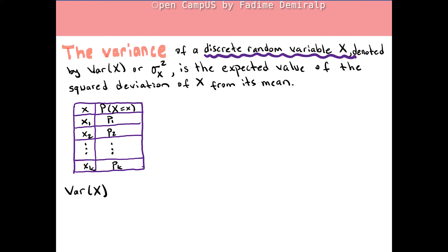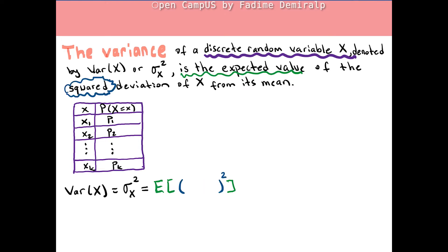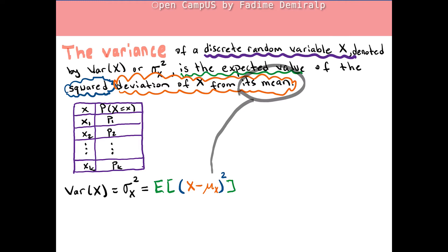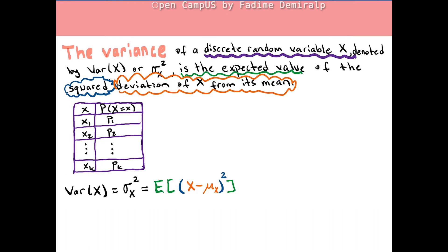The variance of x — or using sigma notation, sigma squared x — is the expected value, but not the expected value of x. It is the expected value of the square deviation of x from its mean. Mu x is the mean value of x. We are going to use the expected value formula introduced in the previous video, but here the outcomes will not be x sub 1 through x sub k, but square deviations from the mean.